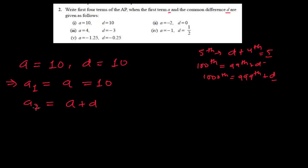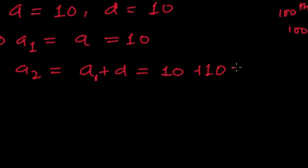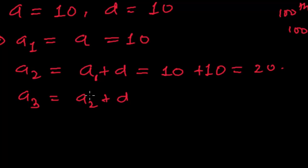So I need the second term, that is why I am just adding the common difference to the first term. So the first term is A, that is 10, and the common difference is again 10. So 10 plus 10, that is 20. Now for the third term, since I need the third term, I will be adding the common difference to the second term. The second term is 20.